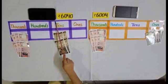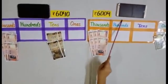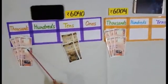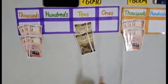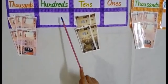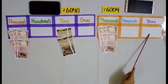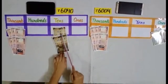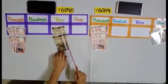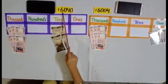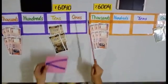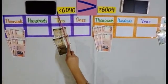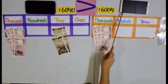The price of this mobile is 6,040 rupees and this mobile is 6,004 rupees. Both sides we have 6,000 rupees and on hundreds there is no currency. This side on tens there is no currency and here we have a 40 rupee note. So, students, 6,040 is greater than 6,004. This mobile is more expensive than this one.